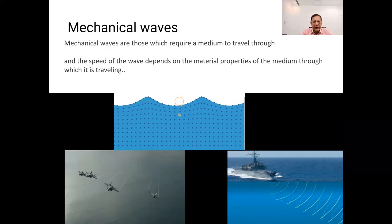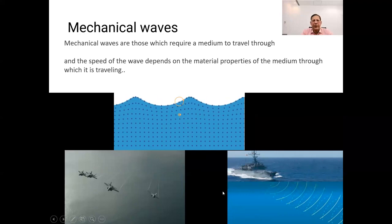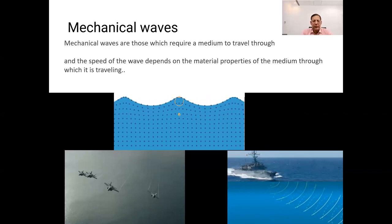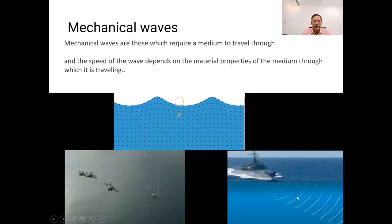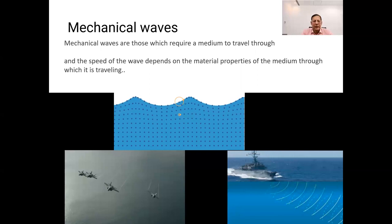We should keep in mind that the propagation speed of mechanical waves can vary depending on the medium through which they travel. For example, the speed at which mechanical waves travel through air is different than its speed in water. This means that the rate at which these waves move and transmit energy can change based on the properties of the medium they encounter. In essence, the environment through which a mechanical wave travels plays a significant role in determining its propagation speed.